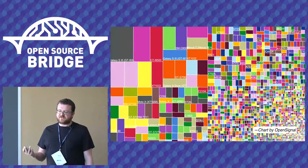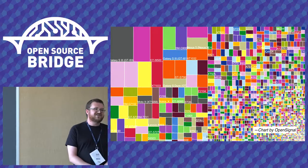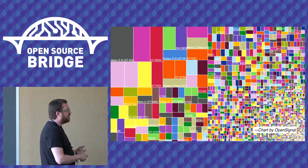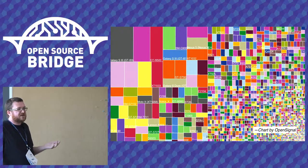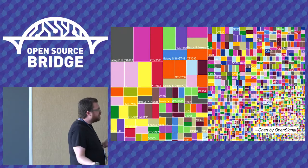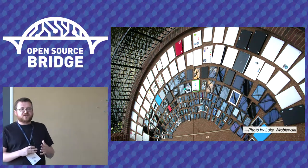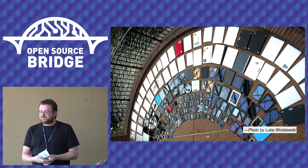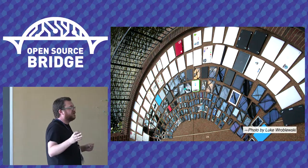Diversity isn't just about people's ability — we also have diversity in how people access the web. This is an illustration of 18,000 Android devices on the market as of August 2014. It does not include iOS, Windows, or Blackberry — just Android. They all have different specs, screen sizes, and capabilities. Because users are accessing our content from all these different devices with all these different capabilities and screen sizes, we can't make assumptions about how they're viewing our content. We can't tell them they have to use a specific device.